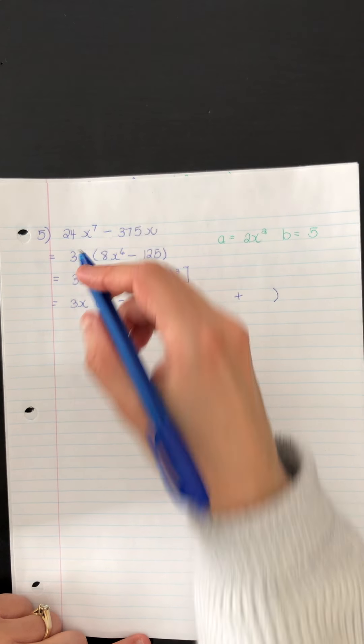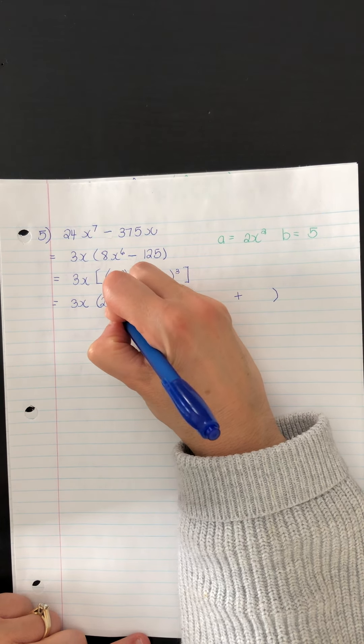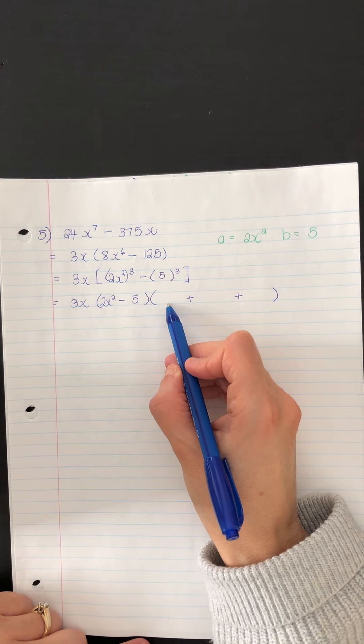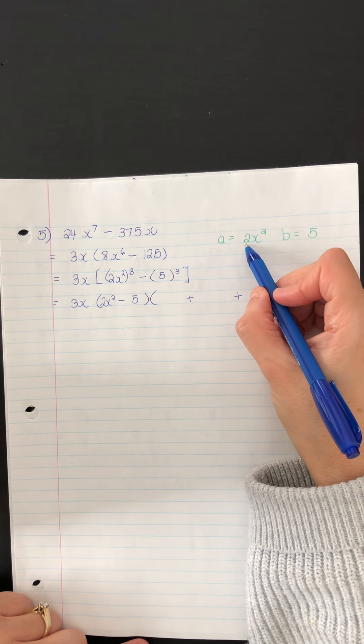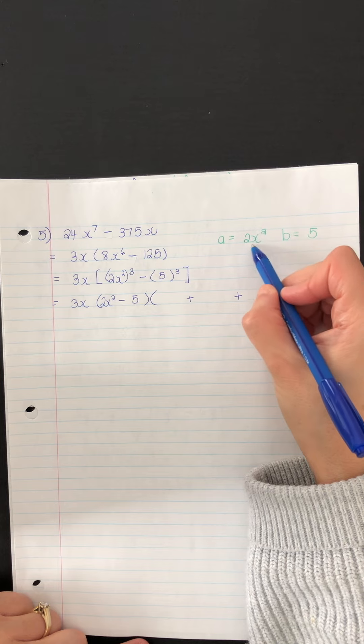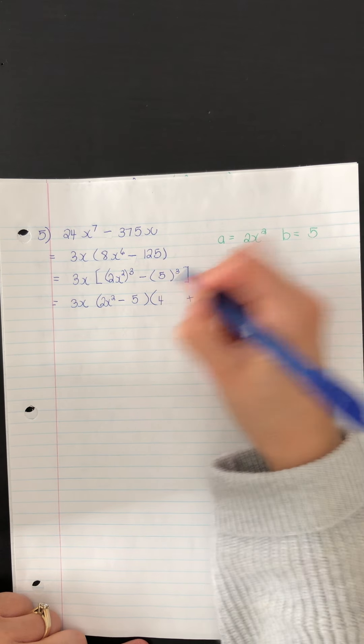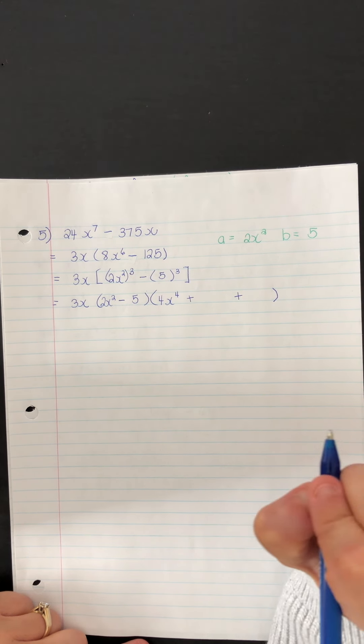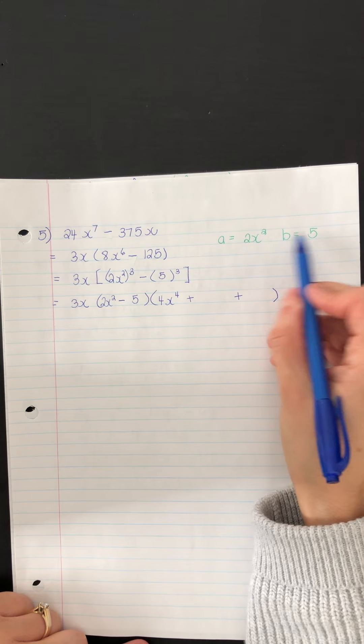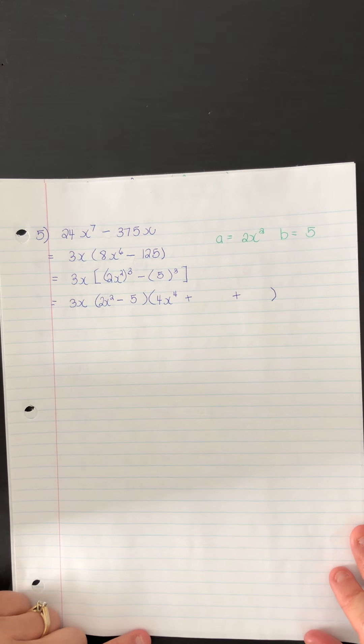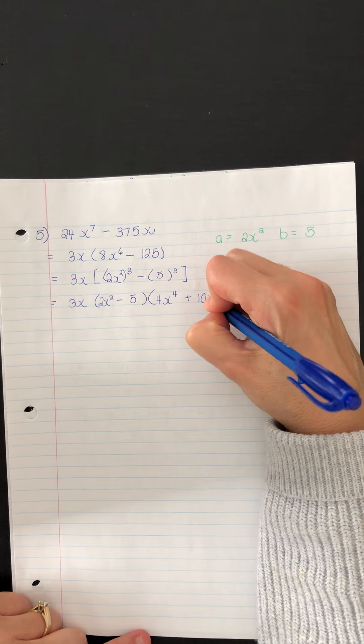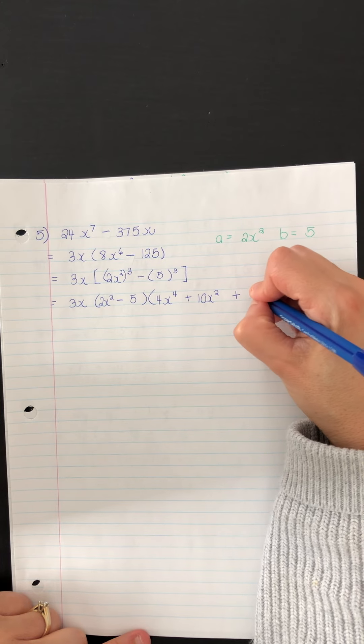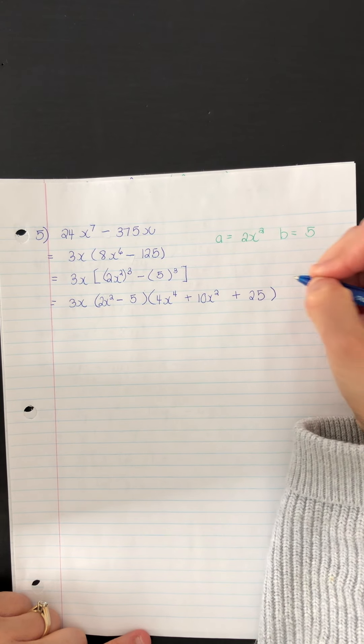According to the formula, this first bracket is a minus b. So it is 2x squared minus 5. This second bracket should start with a squared. You must square the numeric part and the power. So 2 squared is 4. x squared all squared is x to the 4. Multiply a and b. So you get 10x squared. And finally, we have to square b. So b squared is 25. And now we're all done.